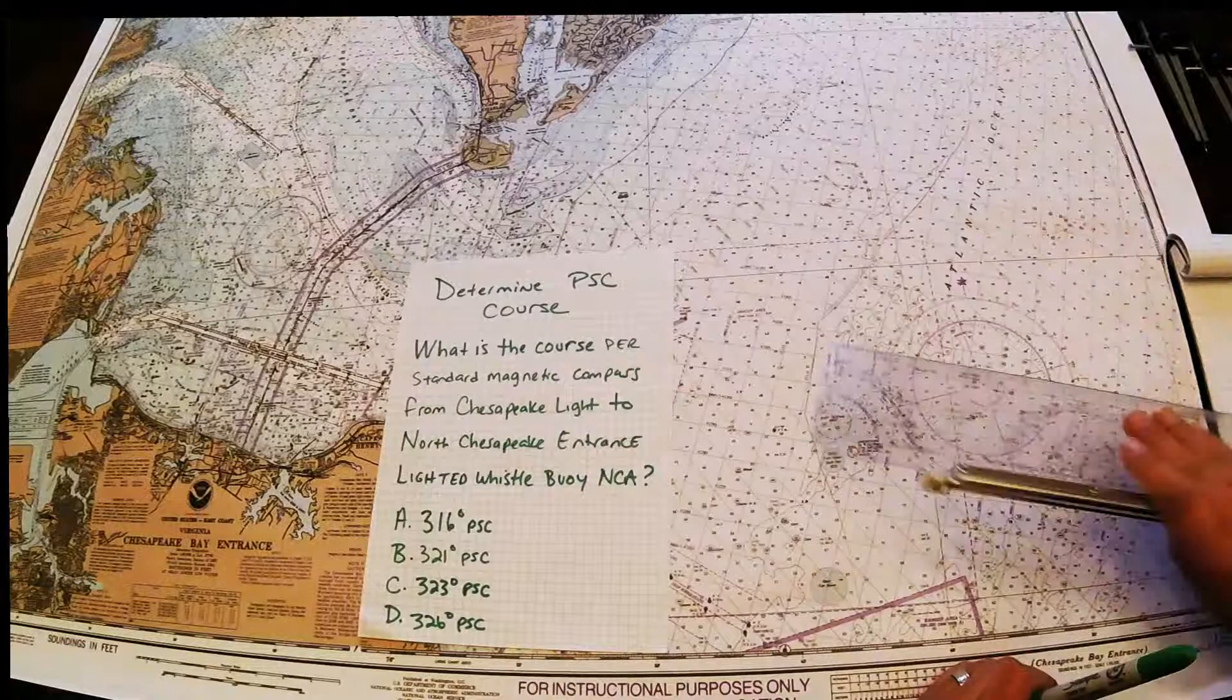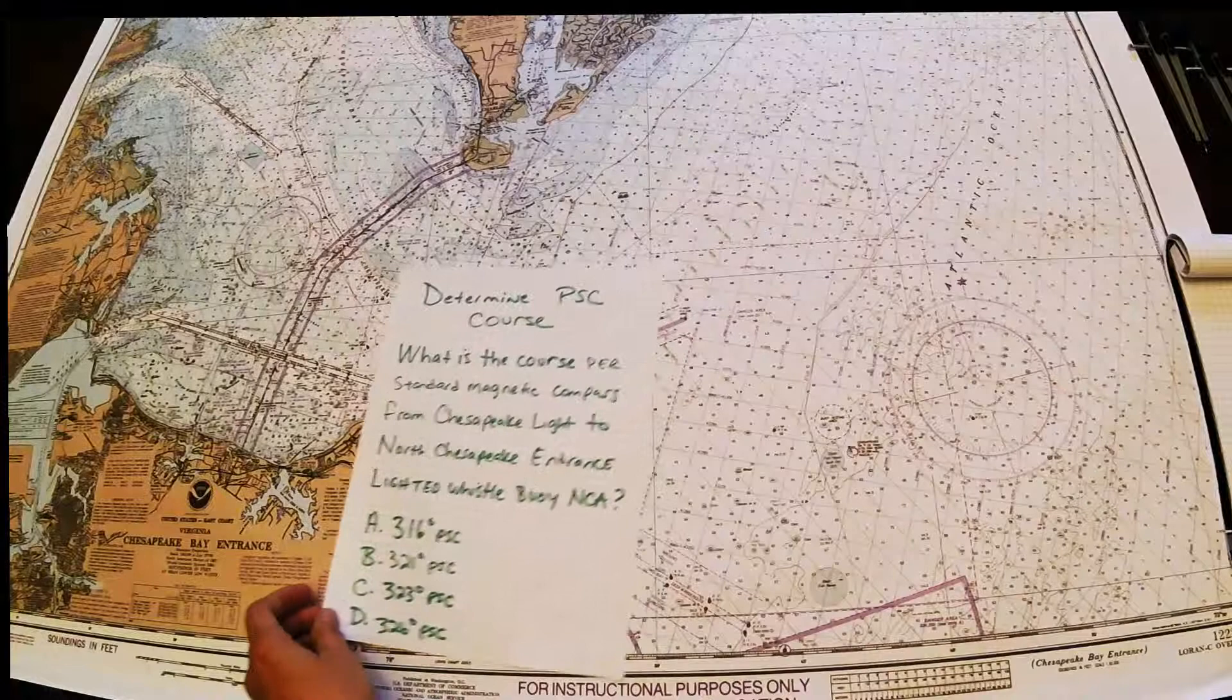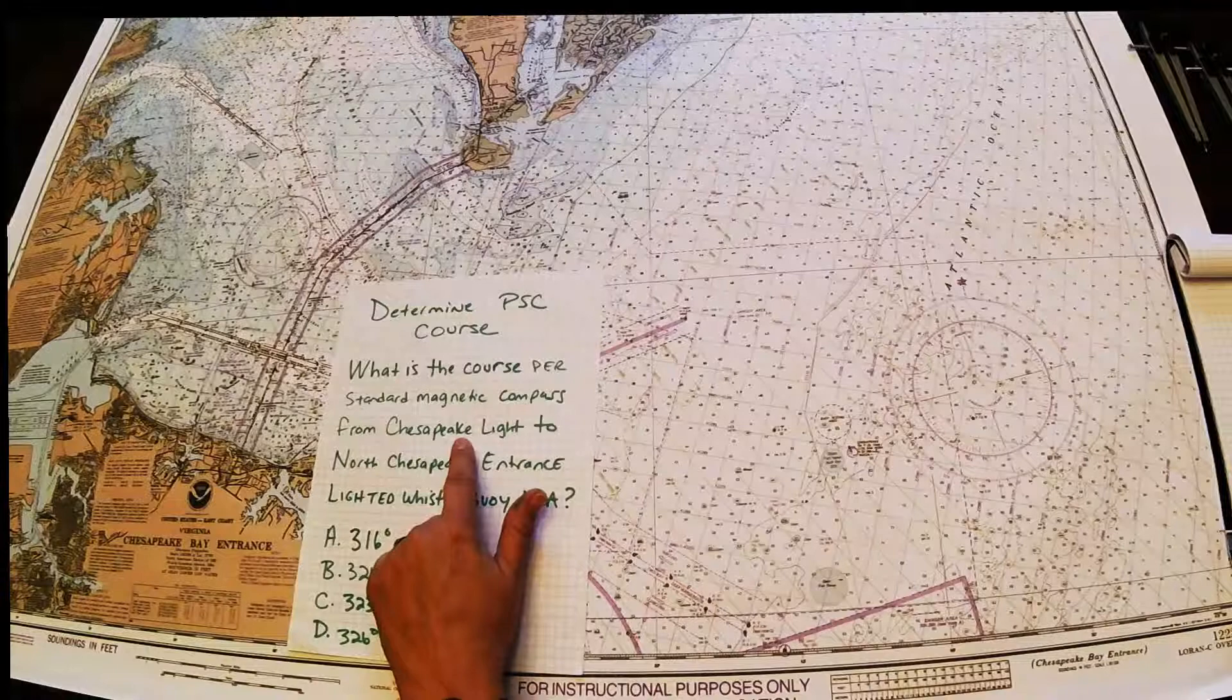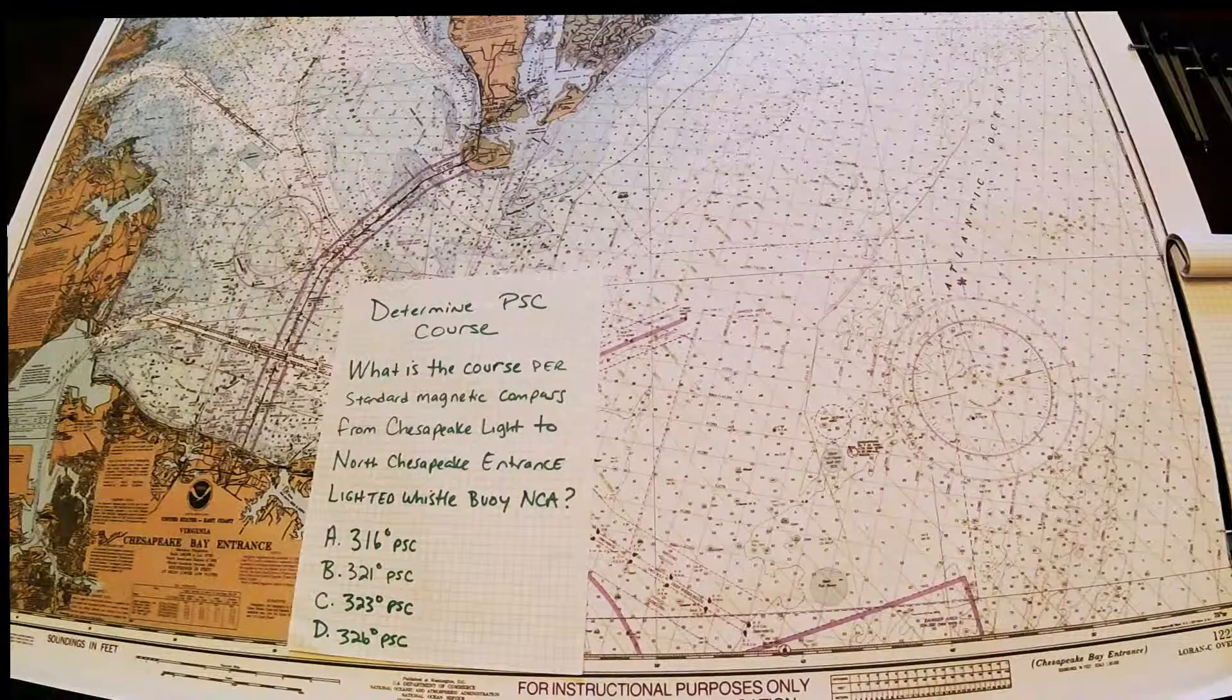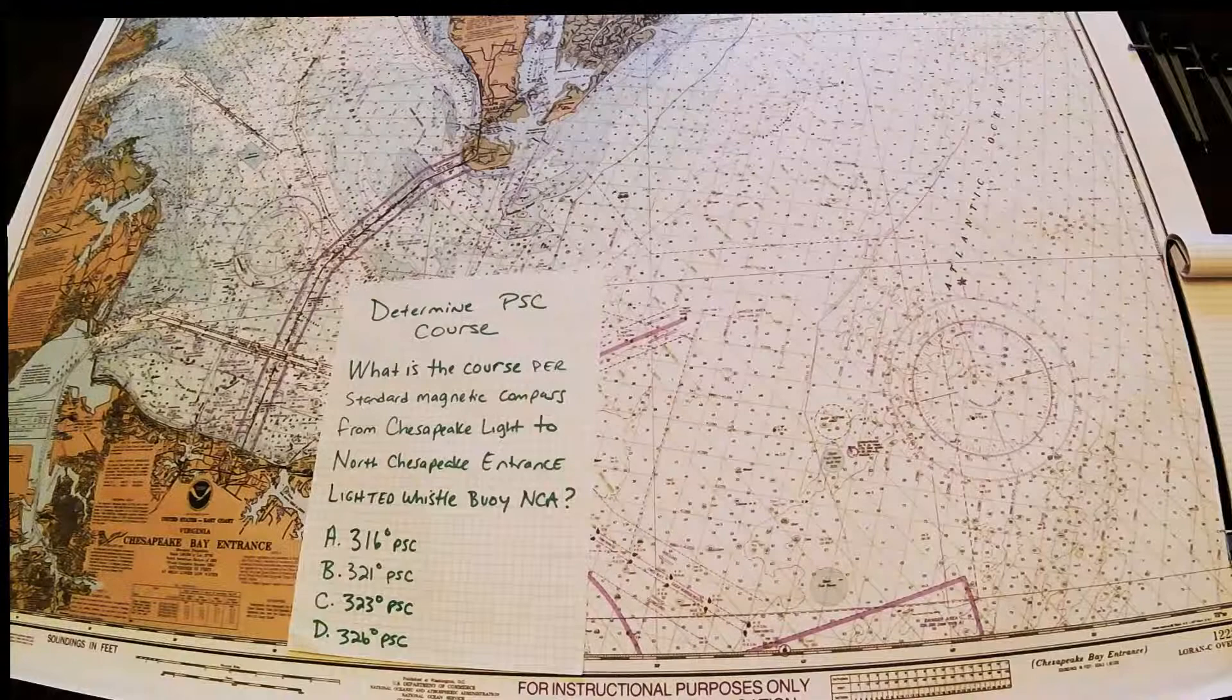So in this case, the first thing that it states is what is the course to steer from Chesapeake Light to the North Chesapeake Entrance lighted whistle buoy NCA. If you don't know where these aids are, it's always good to look in the light list.